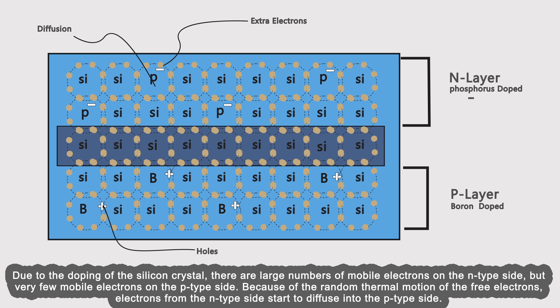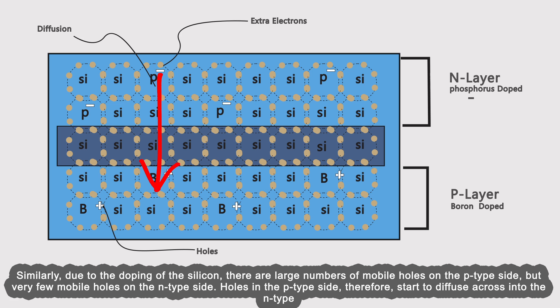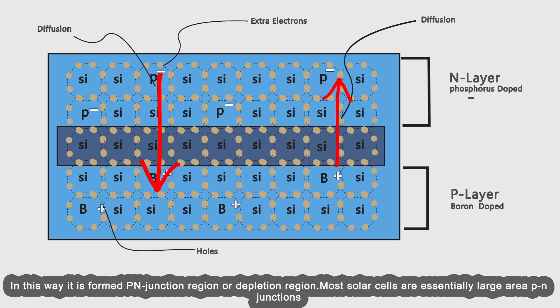Similarly, due to the doping of the silicon, there are large numbers of mobile holes on the p-type side but very few mobile holes on the n-type side. Holes in the p-type side therefore start to diffuse across into the n-type side. In this way, a p-n junction region, or depletion region, is formed.